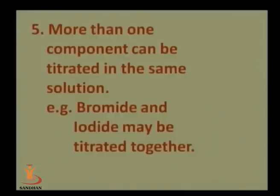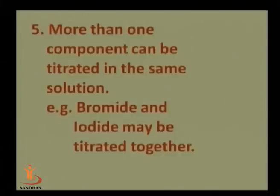In a single solution where more than one component is present, for example bromide and iodide in the same solution, we cannot determine them separately by classical methods. But with potentiometric titration, we can easily detect the endpoint of both analytes. This is an advantage of potentiometric titration — we can determine the endpoint of several similar reagents in the same solution.